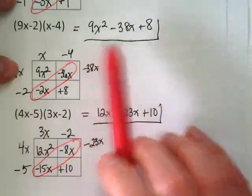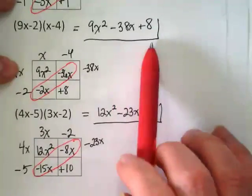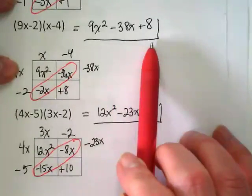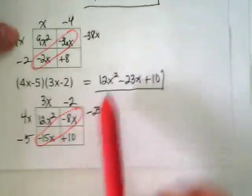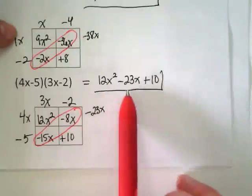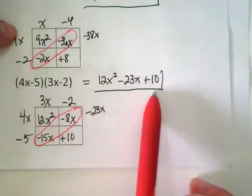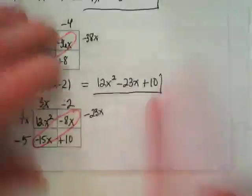Completed. This was 9x squared minus 38x plus 8. Thumbs up on that. Second was 12x squared minus 23x plus 10. Are we good?